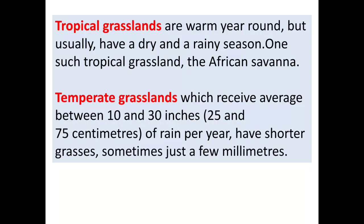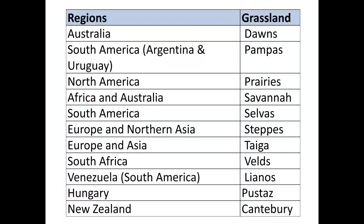Next is temperate grasslands. The average rainfall in temperate grasslands is 75 cm per year, and the grasses are very short. So we have now covered two types: tropical grasslands and temperate grasslands.